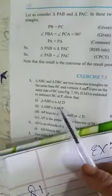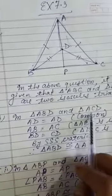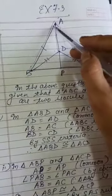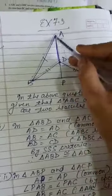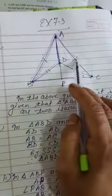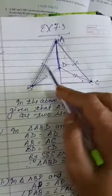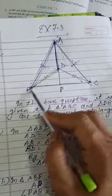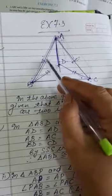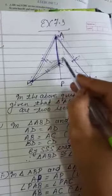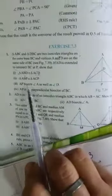In the first part, we have to prove that triangle ABD is congruent to triangle ACD. In triangle ABD and triangle ACD, side AD is common. AB is equal to AC as it is given because triangle ABC is an isosceles triangle. Similarly, BD equal to DC, as these are the sides of the isosceles triangle DBC. So using SSS criteria, these two triangles are congruent.